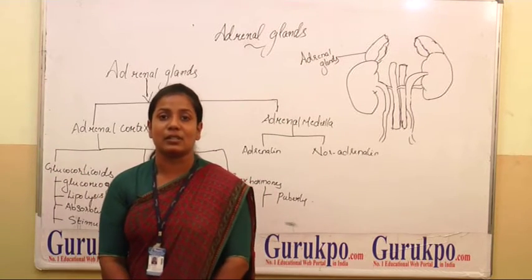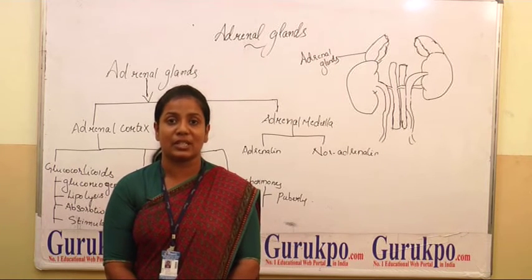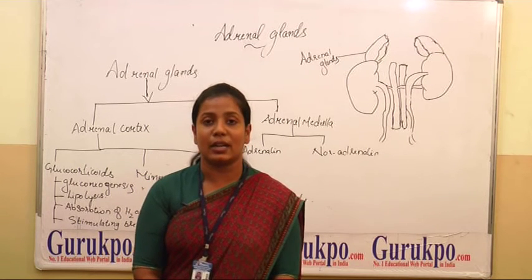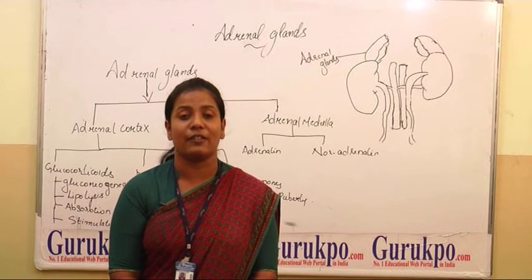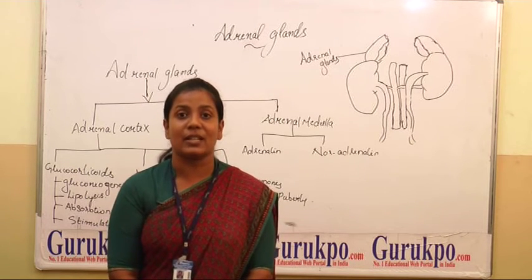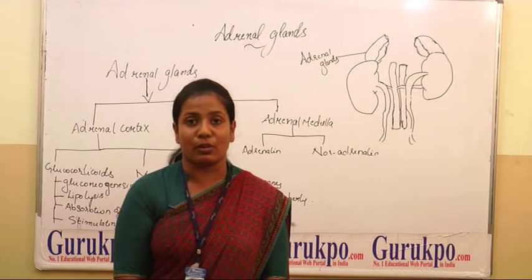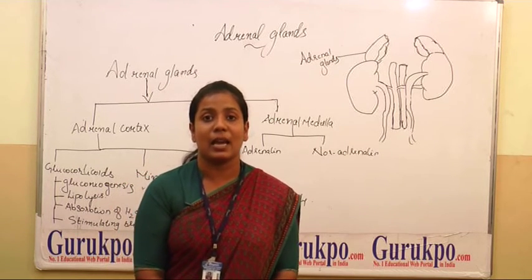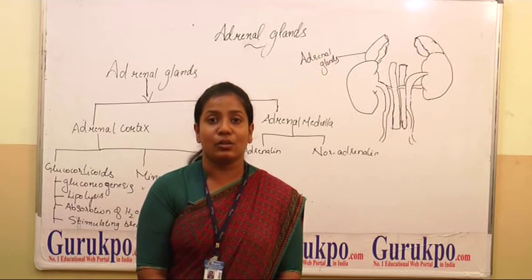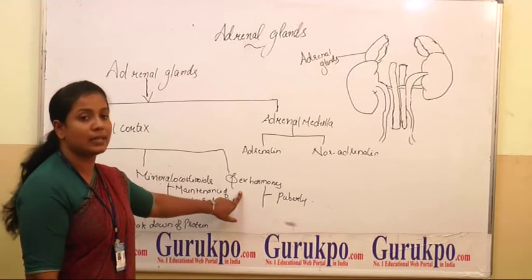The adrenal cortex consists of three layers: zona glomerulosa, zona fasciculata, and zona reticularis. The adrenal glands secrete three groups of hormones, collectively known as adrenocorticoids or corticoids. They are glucocorticoids, mineralocorticoids, and sex hormones.